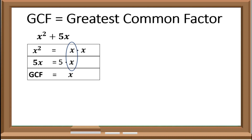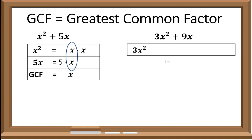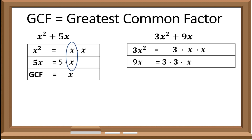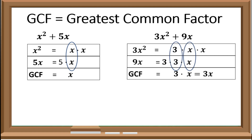Now try this: 3x squared plus 9x. Again, we need to look for the prime factors of each term. For 3x squared, that would be 3 times x times x. For 9x, we have 3 times 3 times x. Second, we need to identify the common factors of each term. In this case, we have 3 and x. So the GCF of 3x squared plus 9x is 3x.